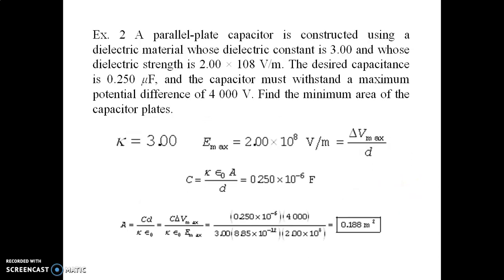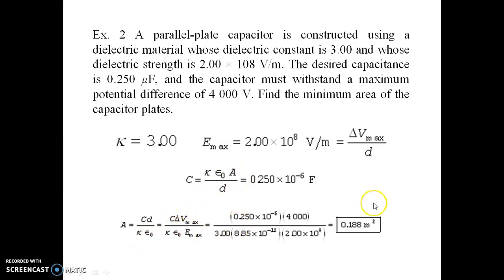One more example: a parallel plate capacitor is constructed using a dielectric material with dielectric constant k = 3 and dielectric strength 2 × 10⁸ V/m. The desired capacitance is 0.25 microfarad and it must withstand a maximum potential difference of 4000 V. Find the minimum area of the capacitor plates. Using E_max = ΔV_max / d and C = kε₀A/d, we solve for area as A = Cd / (kε₀), substituting all given values of C, ΔV, k, ε₀, and E_max to get a required plate area of 0.188 m².